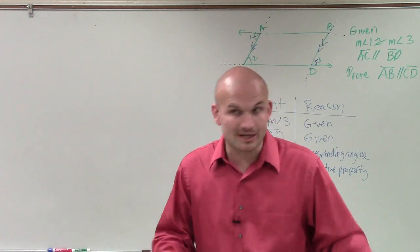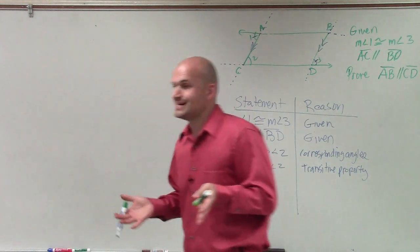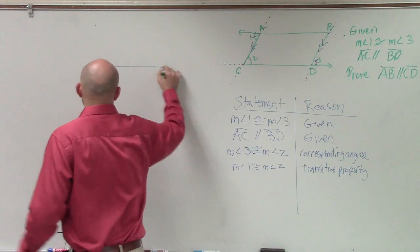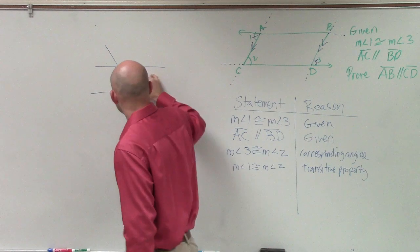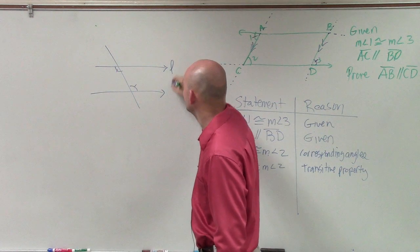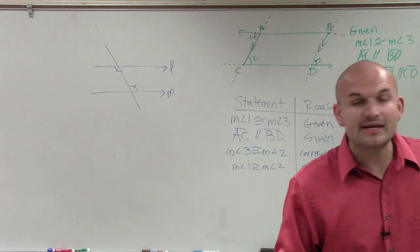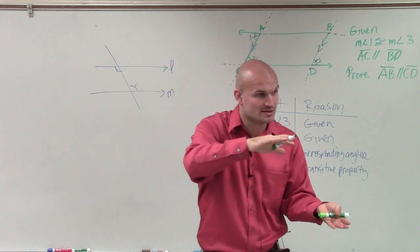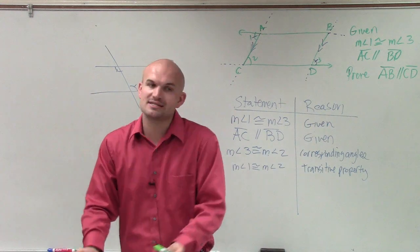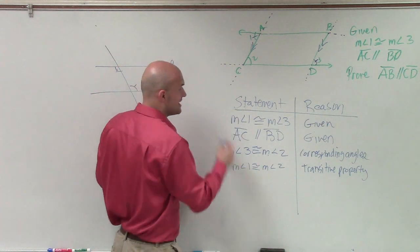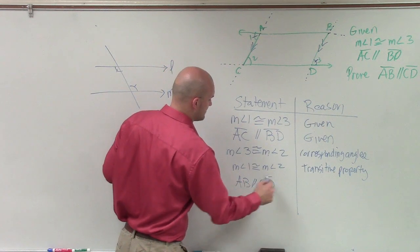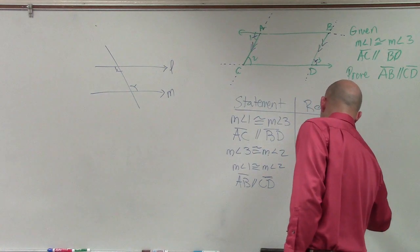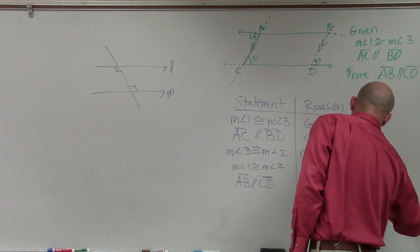Now, if we have alternate interior angles that are equal in value, what does that tell us about the lines that form those alternate interior angles? If you have alternate interior angles that are equal in value, you now have parallel lines. We know that when we have parallel lines, alternate interior angles are equal — and conversely, when alternate interior angles are equal, we can prove parallel lines. So now I can say AB is parallel to CD. Why? Because of the converse theorem of alternate interior angles.